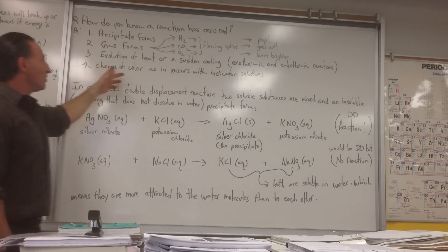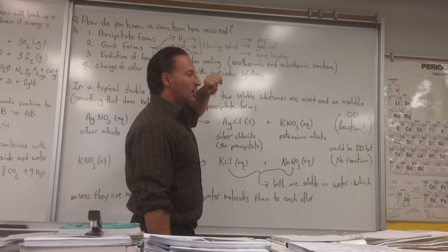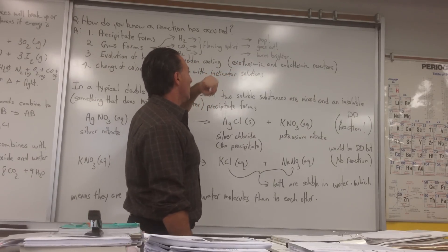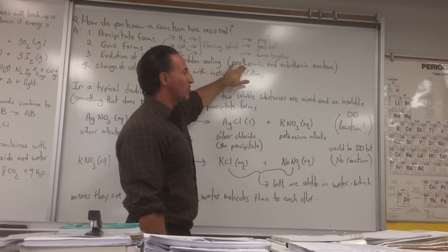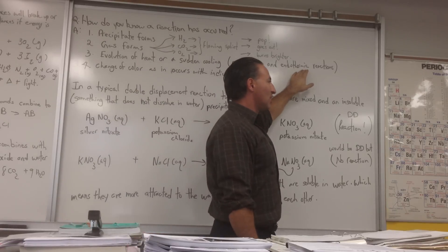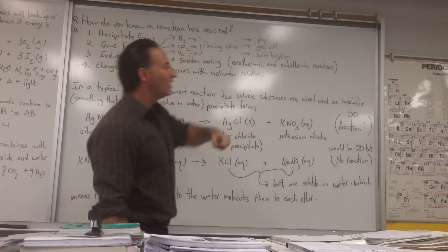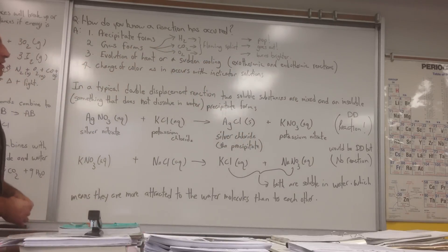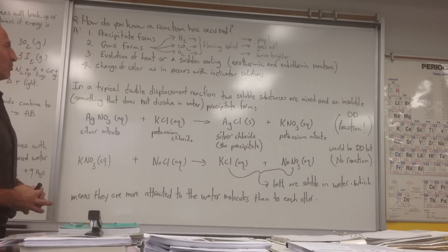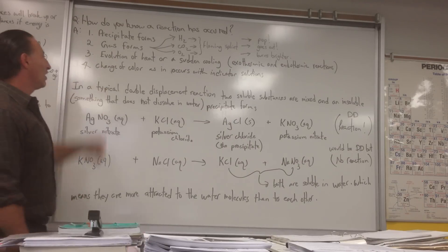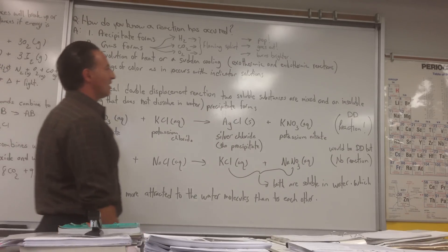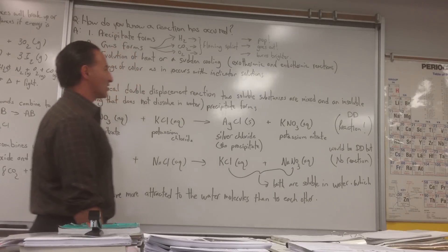Evolution of heat or sudden cooling is also an example of a chemical reaction taking place. If a reaction generates heat, it's exothermic. On the other hand, when you mix two things together and they suddenly get colder, it's an endothermic reaction. We're going to learn a little bit more about that when we do the chapter on thermodynamics. And finally, a change of color, as occurs with indicator solutions, is also indicative of a reaction taking place.